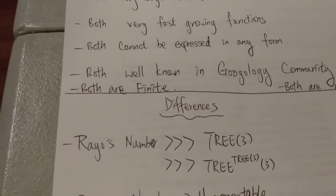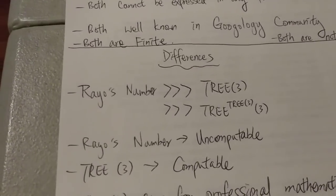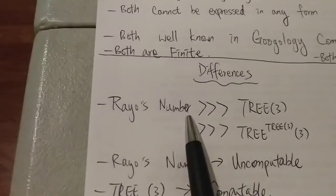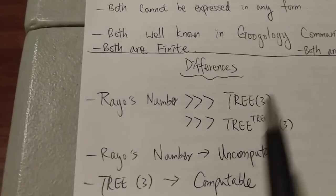Now let's talk about the differences. So of course, Rayo's number is way, way, way bigger than TREE(3).